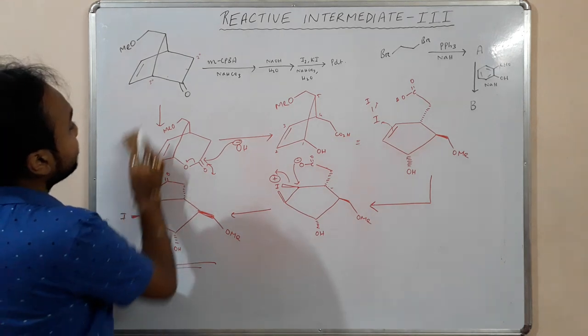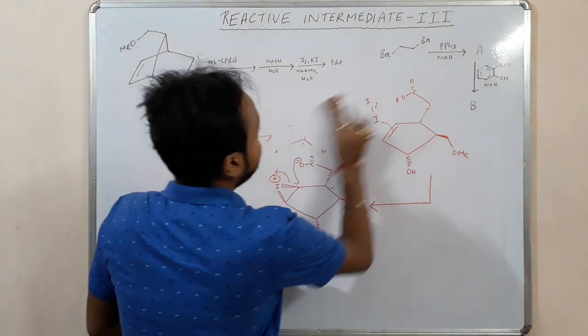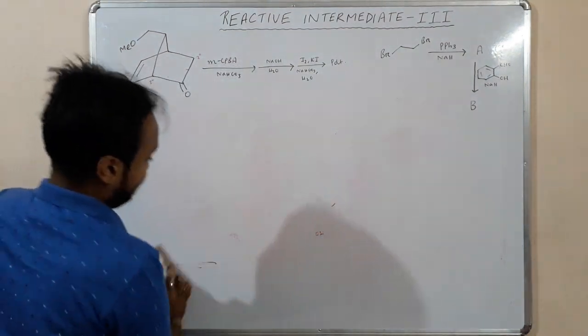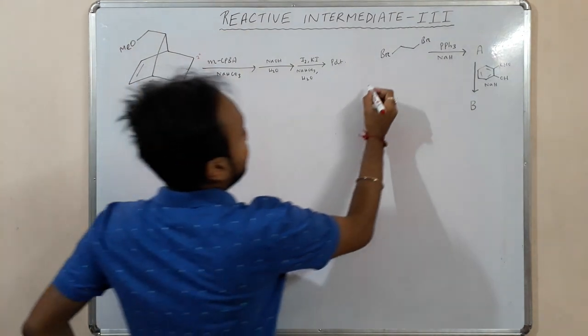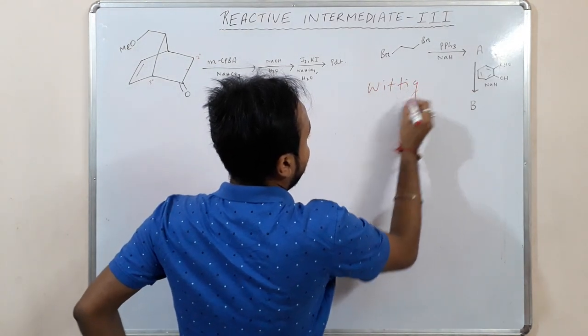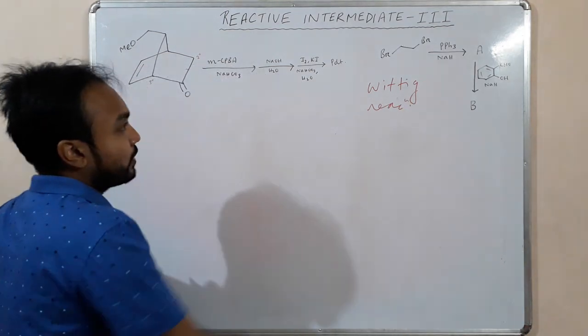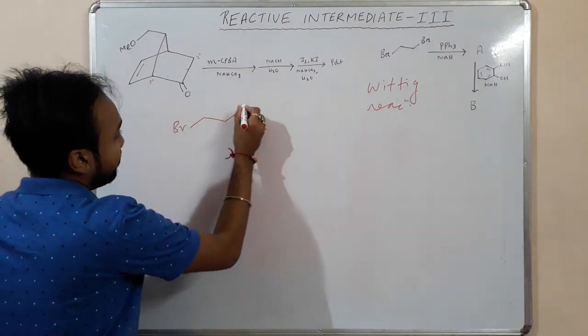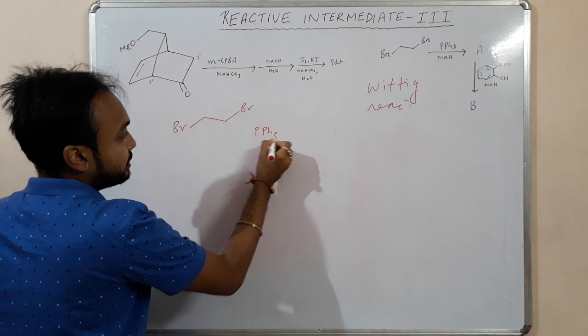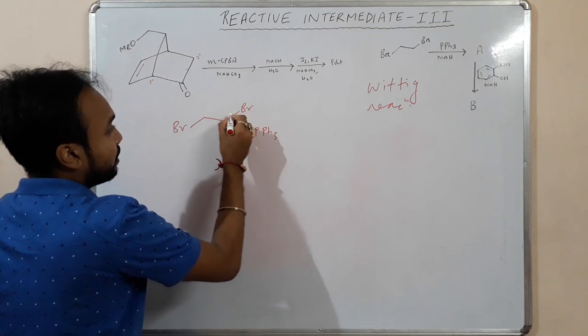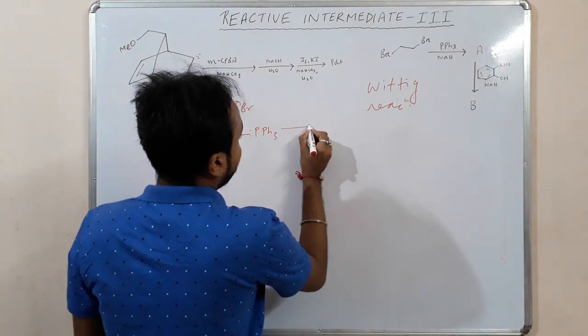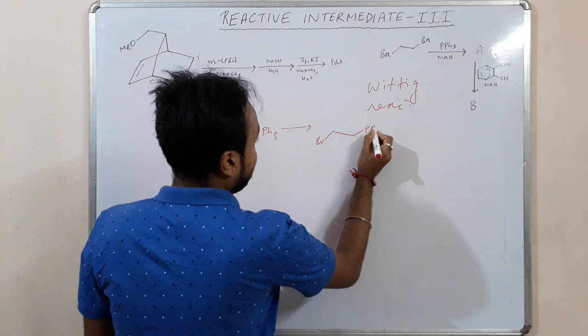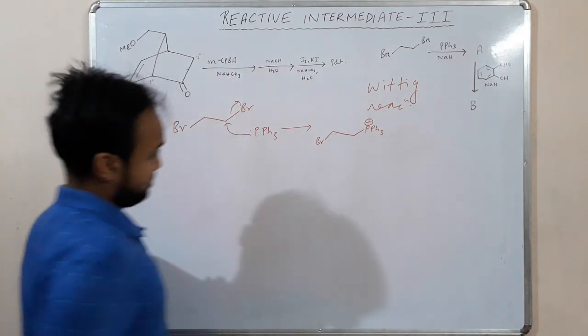Now let us move to the second one. In the second one, you are very familiar with this reaction - that is the Wittig reaction. What will happen here? We have an alkyl bromide derivative and we have PPh3. So it will attack here, bromide leaves. That leads to PPh3 plus.